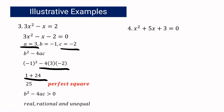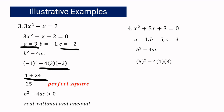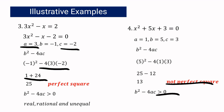For the last example: x squared plus 5x plus 3 equals 0. It is already in standard form, where a is 1, b is 5, and c is 3. Getting the discriminant: 5 squared minus 4 times 1 times 3 gives 25 minus 12, which equals 13. It is greater than 0, but 13 is not a perfect square. Therefore, we can conclude that the roots are real, irrational, and unequal.